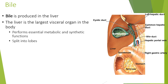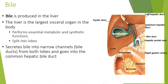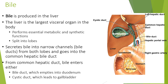Bile is produced in the liver, which is the largest visceral organ in the body. It performs essential metabolic and synthesis functions and is split into lobes. It secretes bile into narrow channels; bile ducts from both lobes merge into a common hepatic bile duct. From the common hepatic duct, bile enters either a bile duct emptying into the duodenum, or a cystic duct leading to the gallbladder. This is all part of enterohepatic circulation — a cycling of bile salts between the liver and the small intestine.